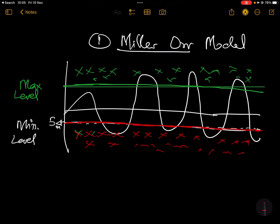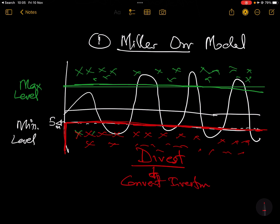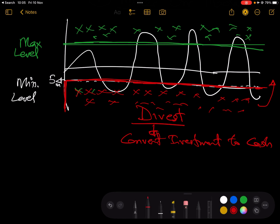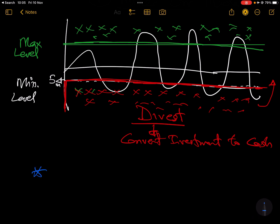So anytime you have cash lower than your minimum level — say five million — you need to divest, which means you need to sell some of your investments and convert investment to cash to increase your cash balance. But the question is: do you increase that cash balance back to the minimum level? No, you don't.